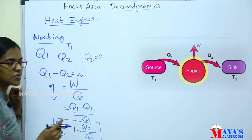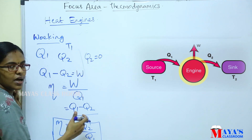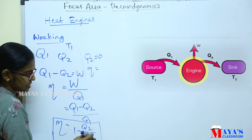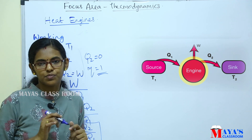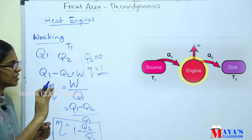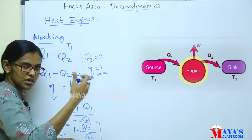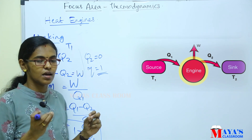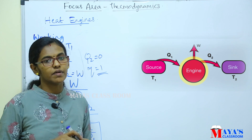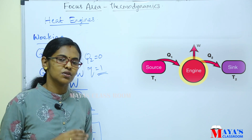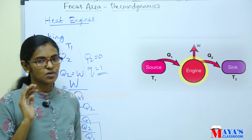The efficiency of a heat engine is 1 minus Q2 over Q1. For maximum efficiency, we want Q2 to be as small as possible — minimum heat wasted. If there were no waste heat at all, Q2 would equal zero, giving 100% efficiency. But Q2 equal to zero is not practically possible. That is the efficiency of a heat engine.